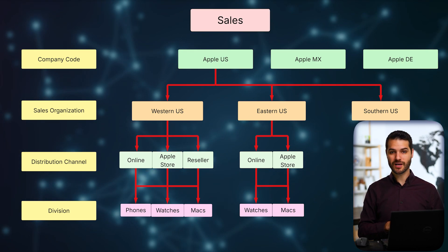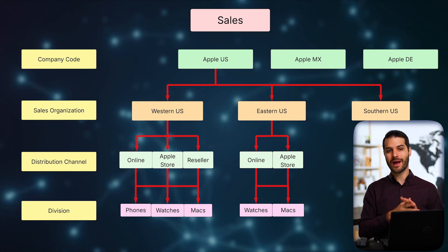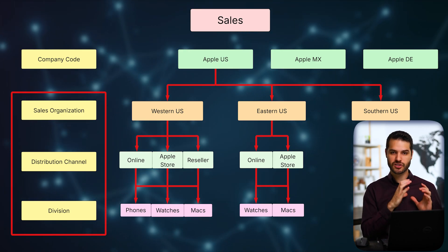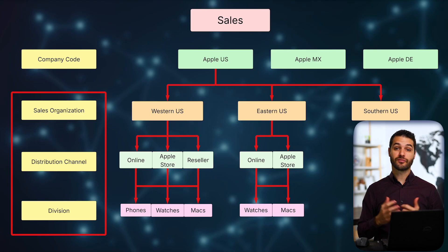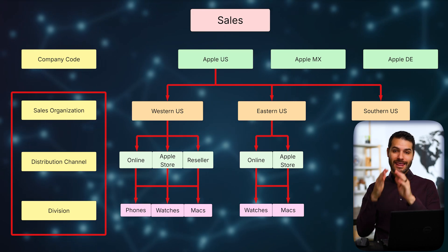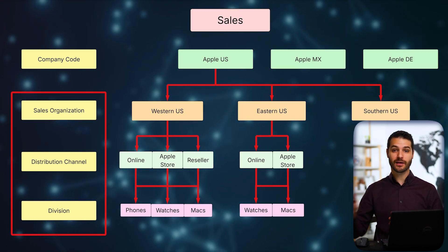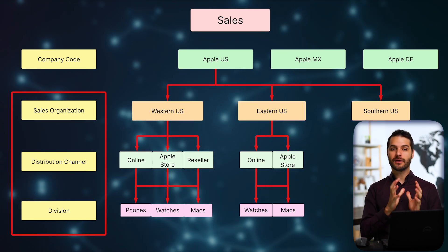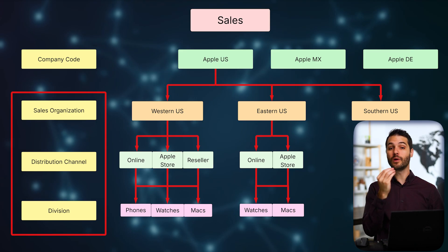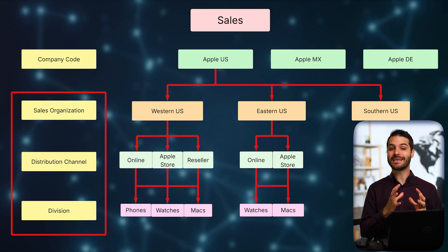There's one more key element: I'm going to put a red box around sales organization, distribution channel, and division, because any combination of those three is referred to as a sales area. For example, being in the Western US sales organization, selling online, in the watches division — that is one sales area. Eastern US selling through resellers in the Macs division would be a totally separate sales area. Sales areas are incredibly important — there are many places in the system where you'll need to input the sales area.